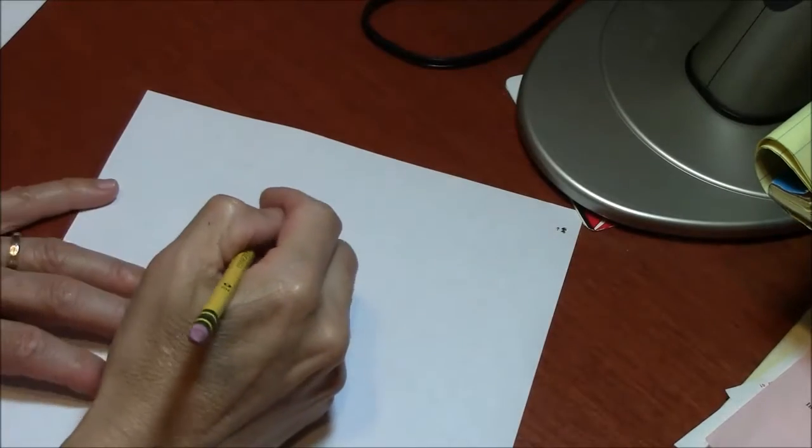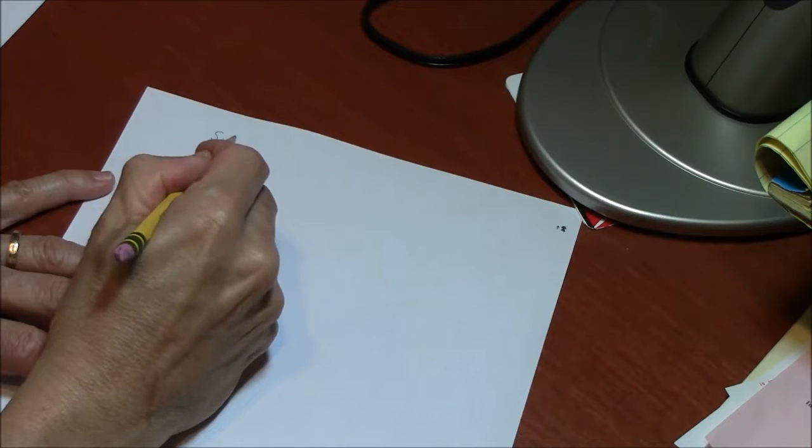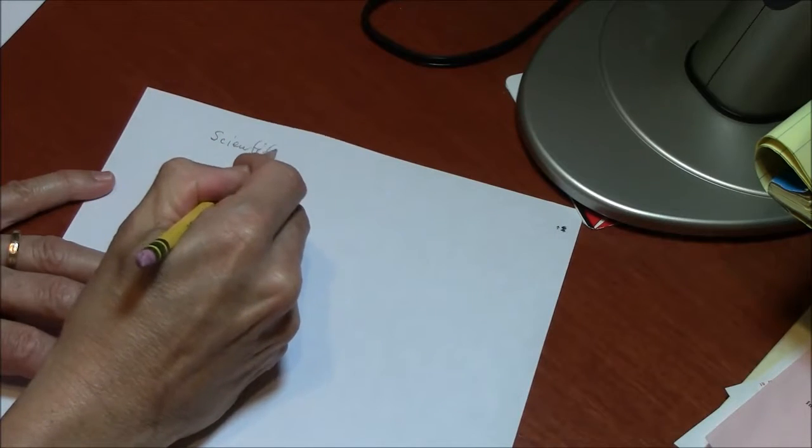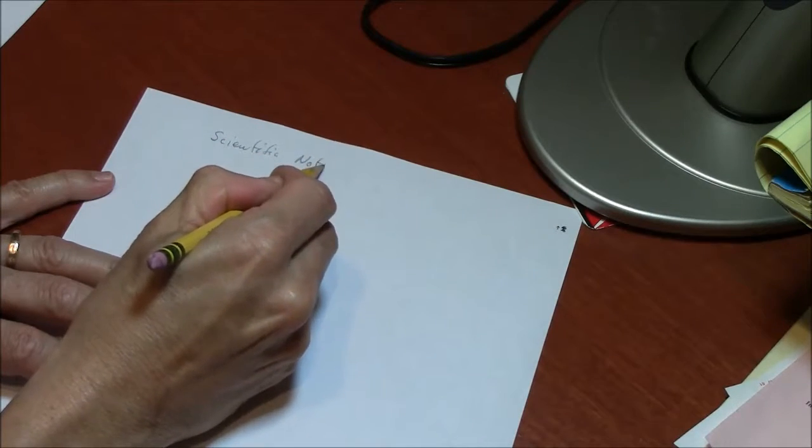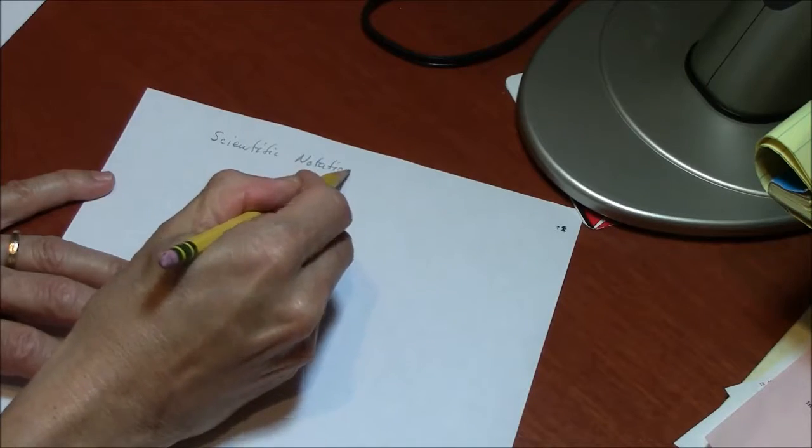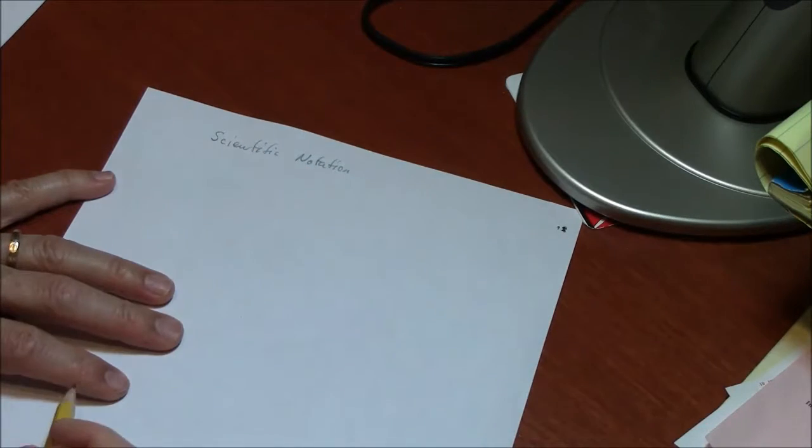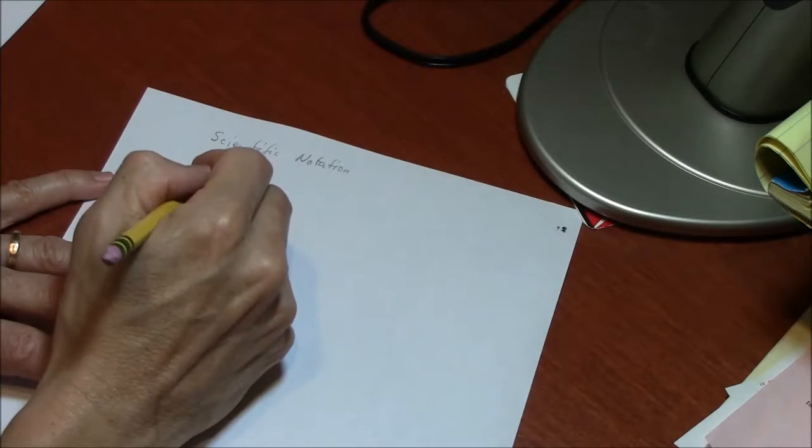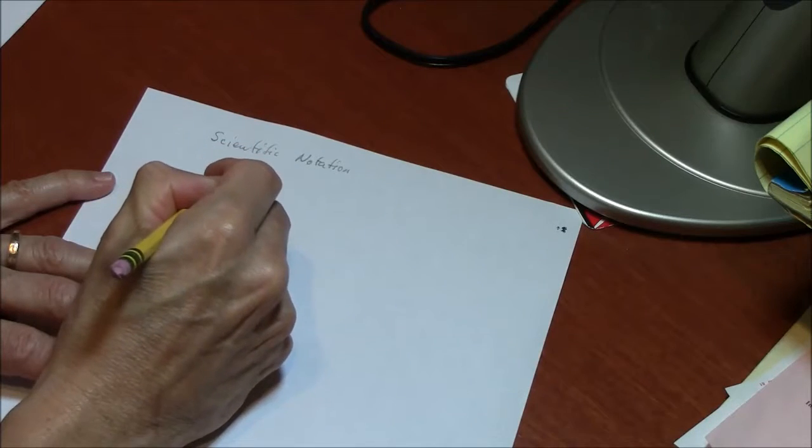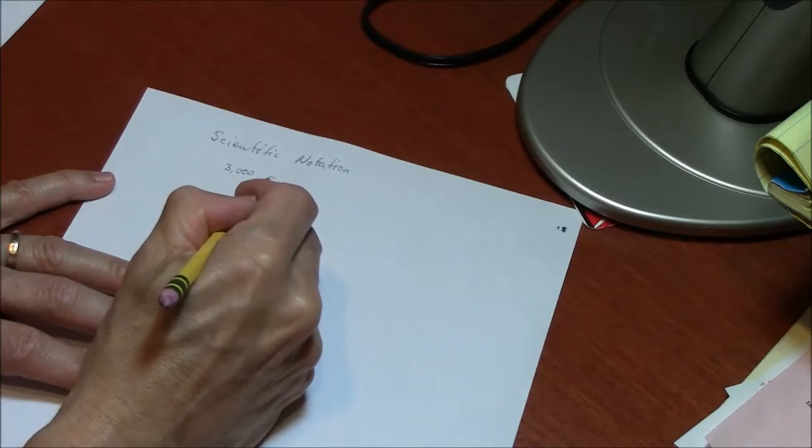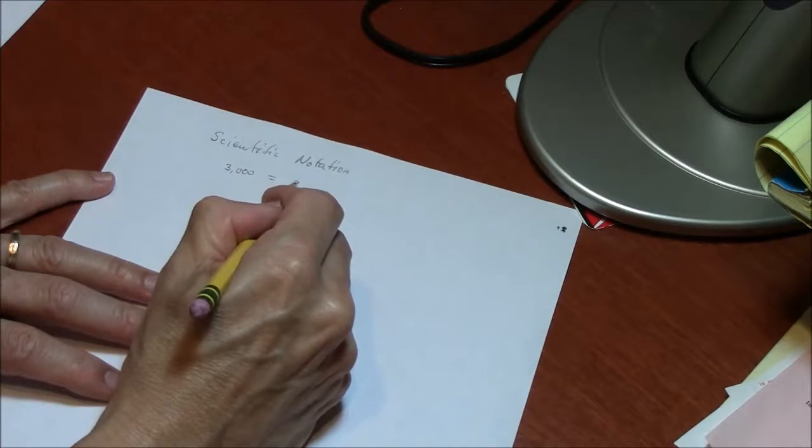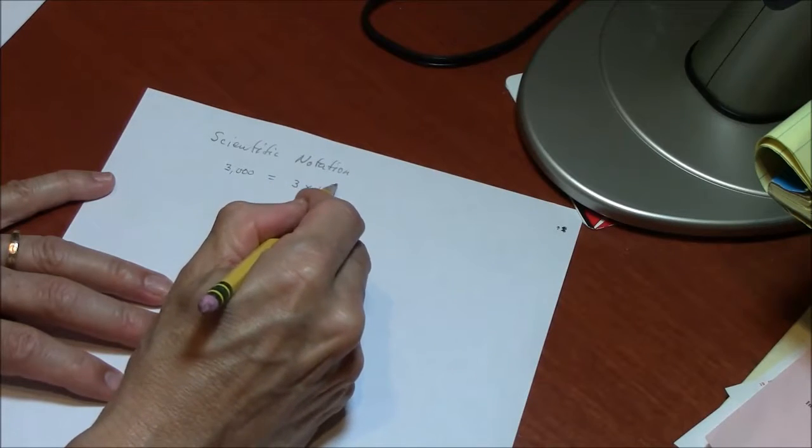Let me first introduce the concept of scientific notation. You are trying to represent very large and very small numbers using powers of 10. For example, I could write 3000, which would be easily understood, or I could write 3 times 10 to the third power.